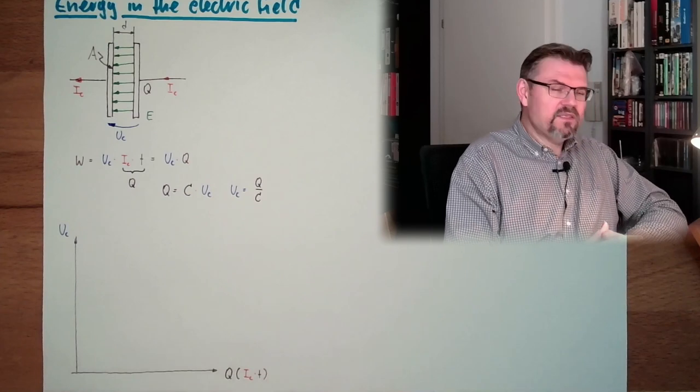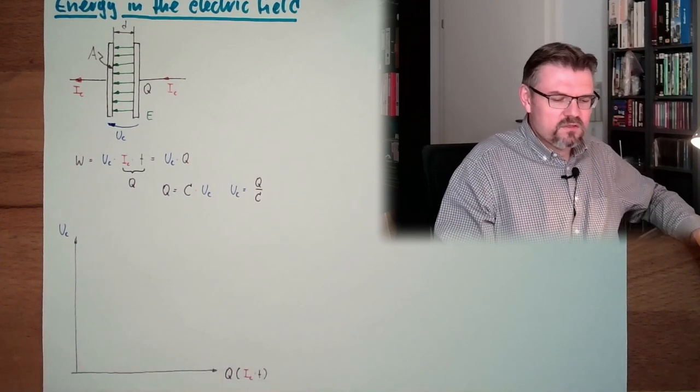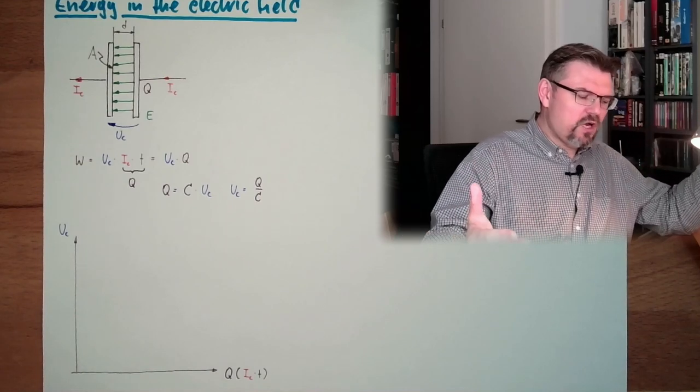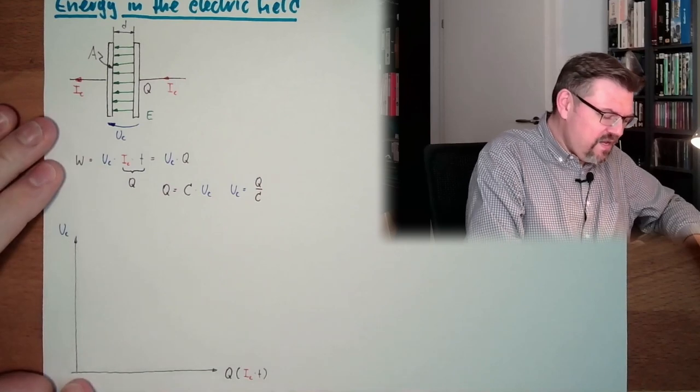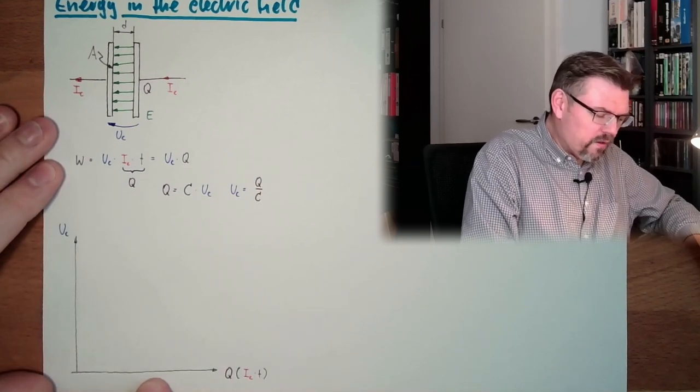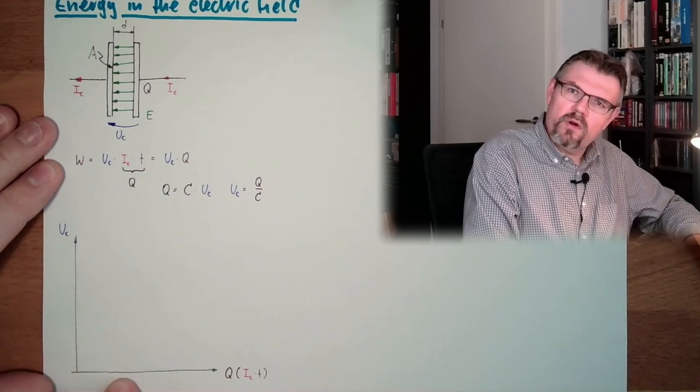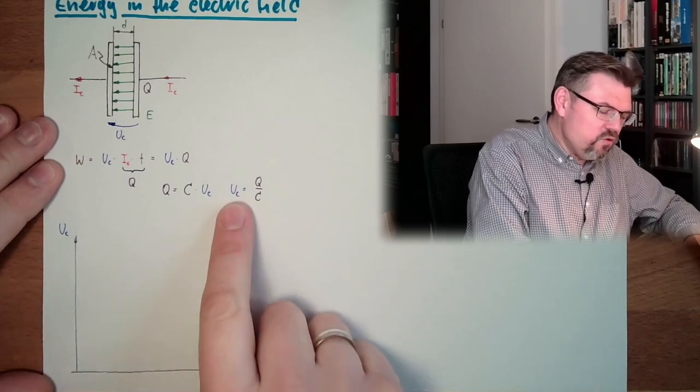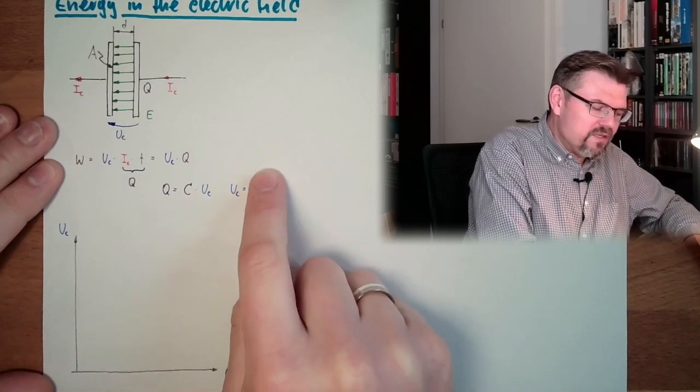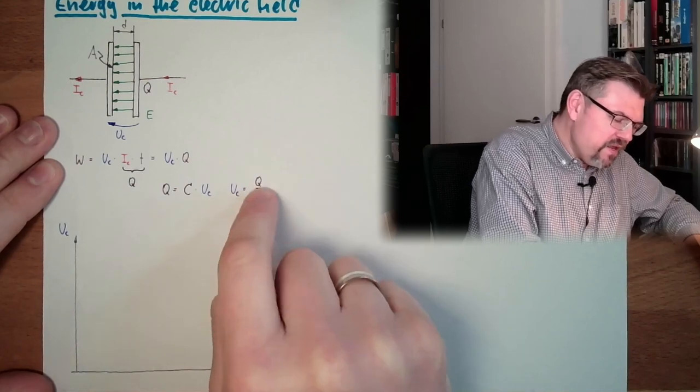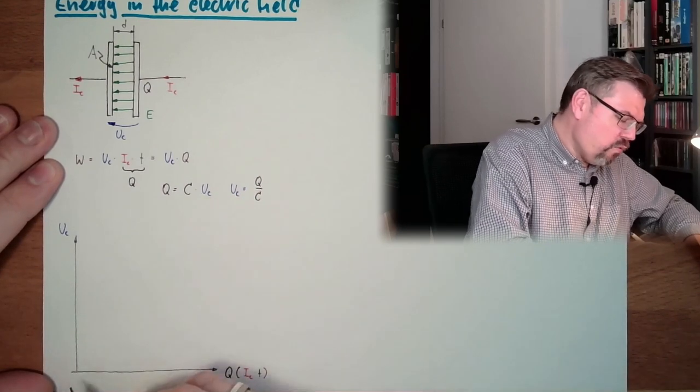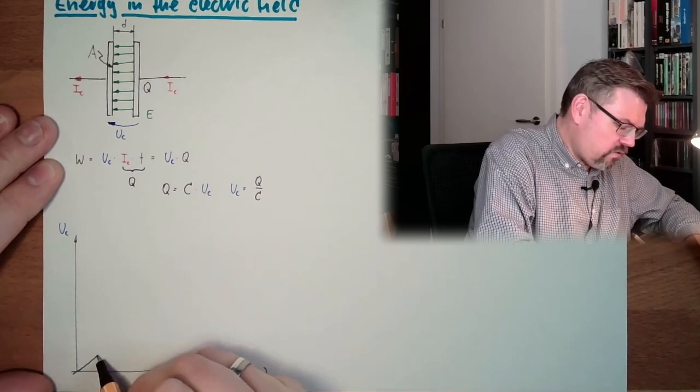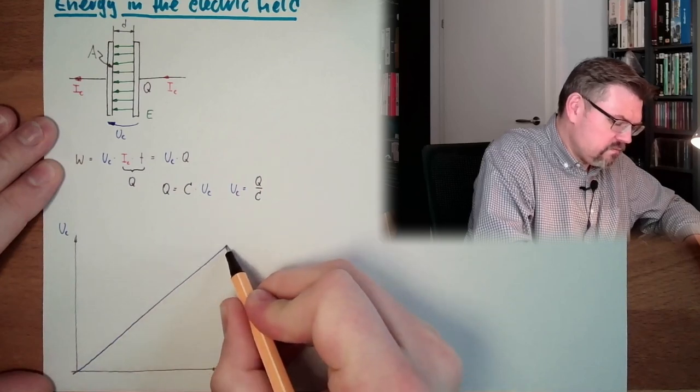We say IC is constant. We're charging the thing with a constant current. Why not? So we're charging and charging and charging. So Q is continuously growing with a certain gradient. What is happening to UC? UC is also growing. That's a linear relationship here. So actually, what we are seeing, if we charge this with a constant current, is that UC is growing linearly. This is how this looks like.